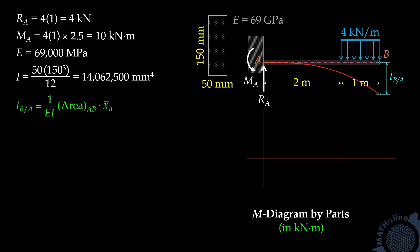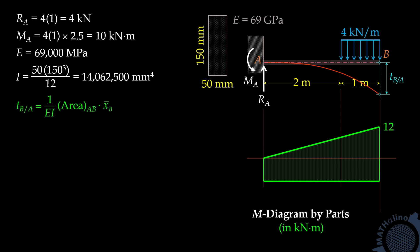Taking point B as our moment center: due to reaction RA, the moment diagram is triangular with magnitude 3 times RA equal to 12. Due to the moment at A, the moment diagram is uniform, equal to negative 10. Due to the 4 kN/m uniform load, the moment diagram is a second-degree spandrel with magnitude 4 times 1 times 0.5 equal to negative 2. The centroids of these three areas measured from point B are: 1 meter, 1.5 meters, and 0.25 meter respectively.